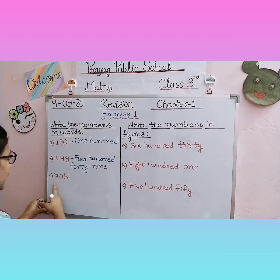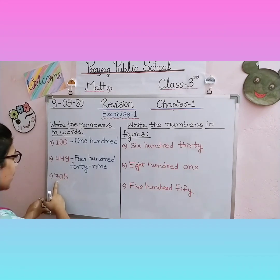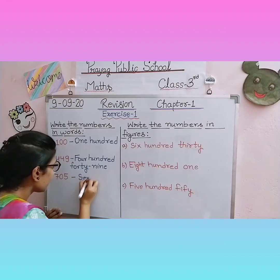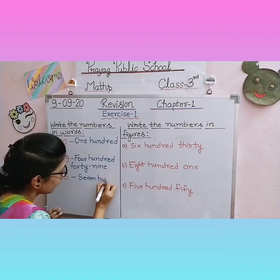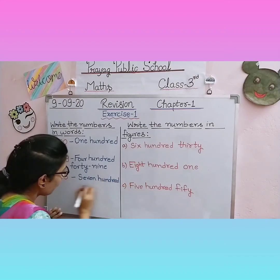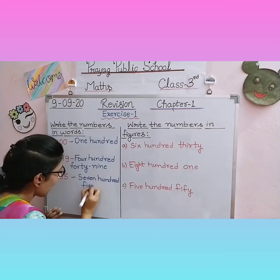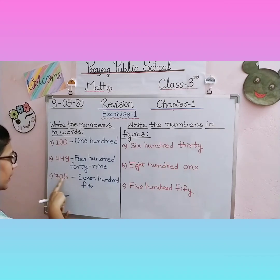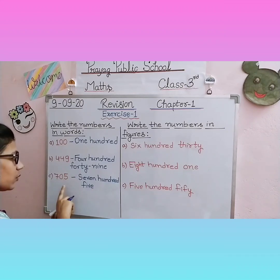Last question, question number C. What number is given? Ones, tens, hundreds. There is a zero in the tens place. So what is this number? Seven hundred five. What will we write? Seven hundred five — F-I-V-E. We do not write zero in words. You will not write zero anywhere here. You write seven hundred five. Leave the tens place blank — there is a zero there, so we do not mention anything in the word form. Seven hundred five. It's completed.